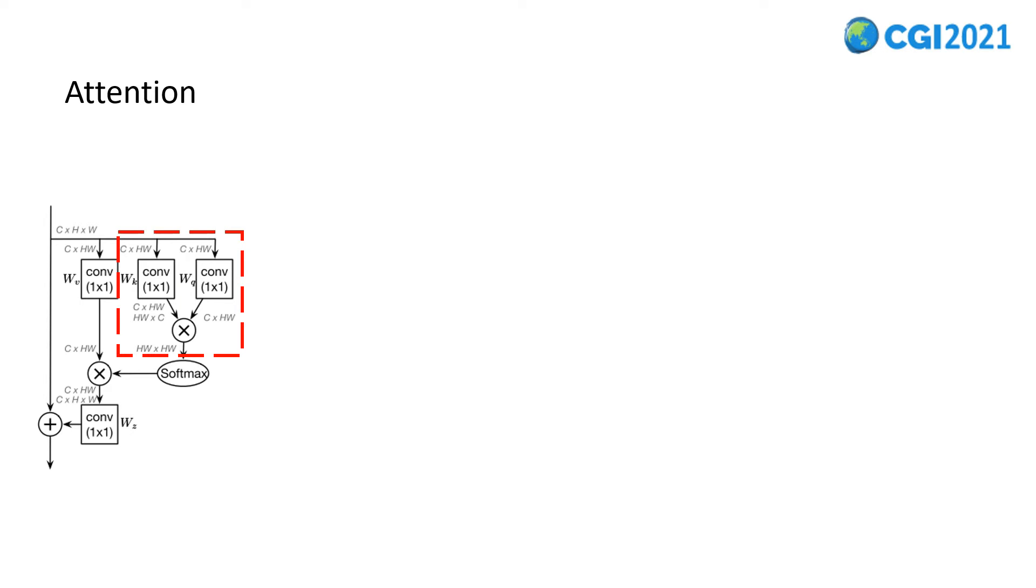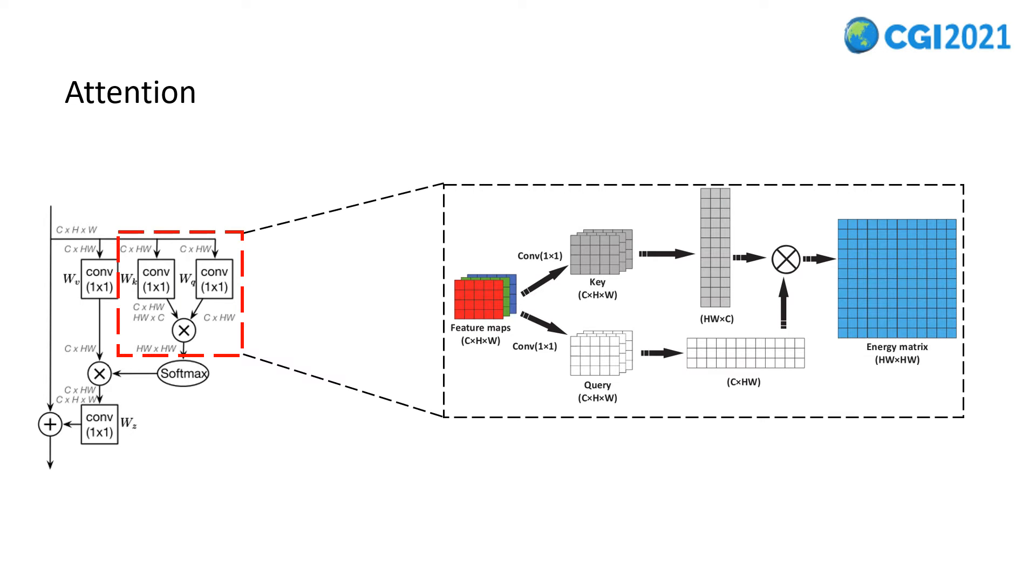Before introducing our work, let's review the concept of attention. The figure shows the framework of non-local, which is an application of attention. The contents in the red box can be shown in the figure on the right. An image includes three dimensions: height, width, and number of channels, which are represented by H, W, and C respectively.